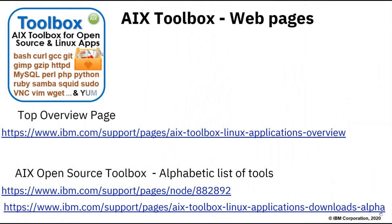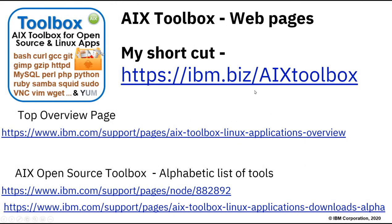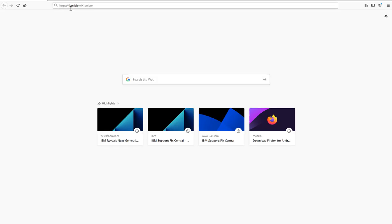Where are the web pages for the AIX toolbox? We have an overview page on IBM support pages. There's an alphabetical list of tools and applications — the URL is quite long, but I've created a shortcut: ibm.biz/AIXtoolbox. Unfortunately it's case sensitive, so it's uppercase AIX and lowercase toolbox. That gets you to one of these links and all the others are a tab away. Let's go have a look at that now: https://ibm.biz/AIXtoolbox.